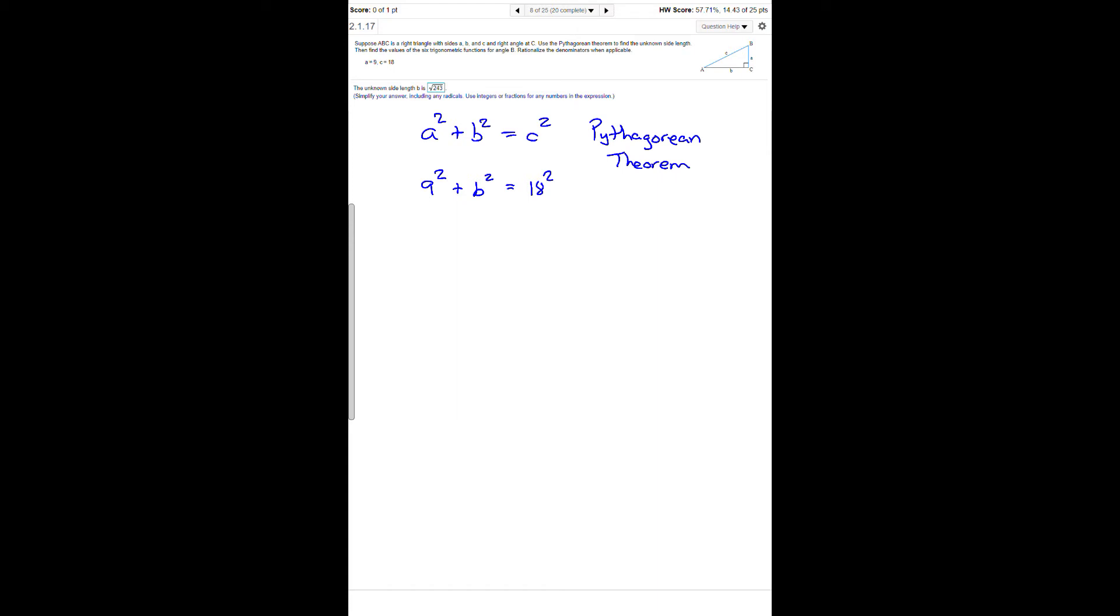Now we do some computation. 9 squared is 81. We don't know what side B is, so that stays B squared. And 18 squared is 324.